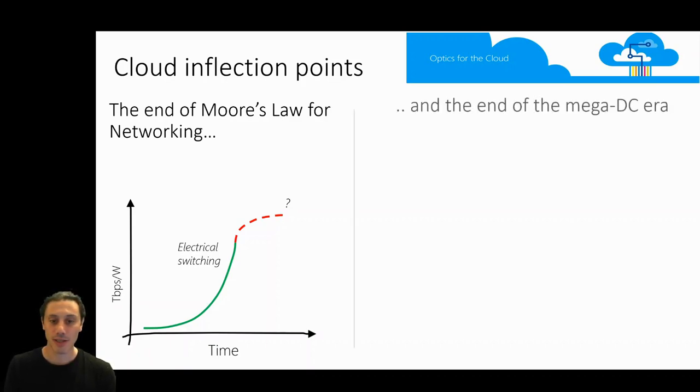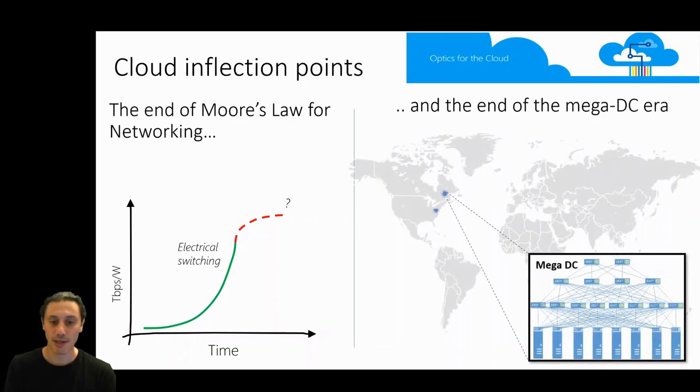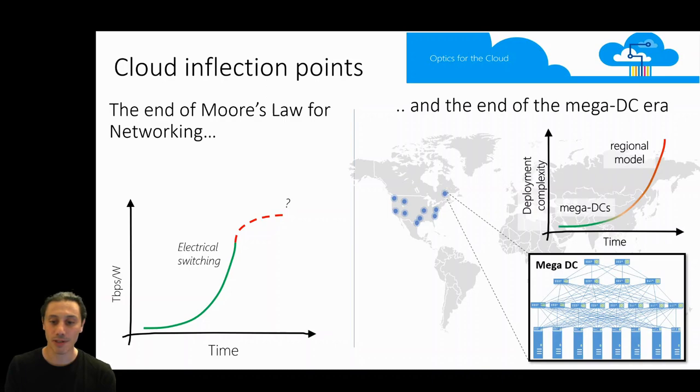At the same time, cloud scaling has become harder over the years. Traditionally, cloud scaling meant building mega data centers with hundreds of thousands of servers across the world and interconnecting them through a wide area network backbone. However, the difficulty of siting and provisioning large mega facilities in or near dense metro areas due to limited resources such as land, power, and connectivity has forced providers to adopt a regional model, where smaller data centers are spread across a small metropolitan area. This has led to increasingly complex interconnects for regional data centers.